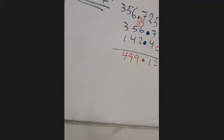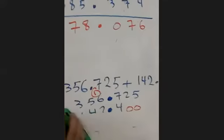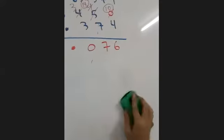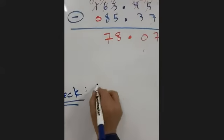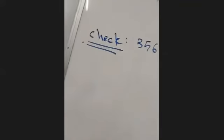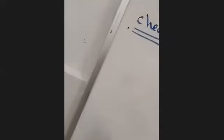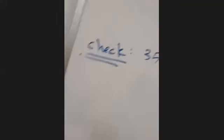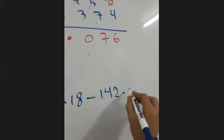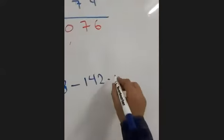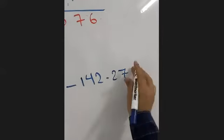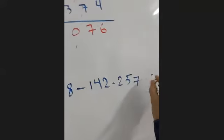Now find the check question. Under this example, we have: 356.36 minus 142.257. Go ahead and do it. If you have questions about how to add or subtract, put your hand up.